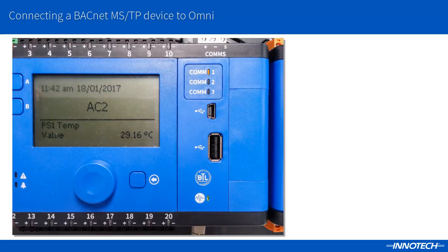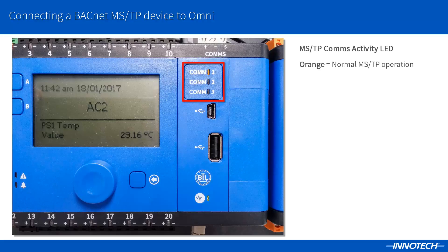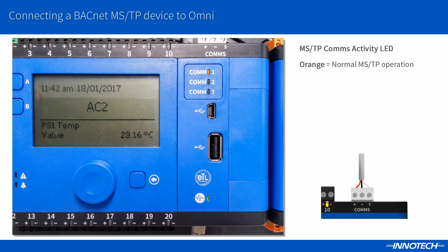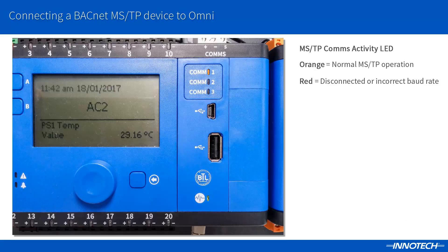Once the MSTP device is connected and the port configured, the comms LED provides some feedback. The normal connected state is an orange appearance to the LED activity. If the LED is red, it can indicate a disconnected cable out to the field or an incorrect baud rate set for the device you are connected to. A green LED state indicates the MSTP is initializing, or it could mean that the cable is incorrectly terminated.